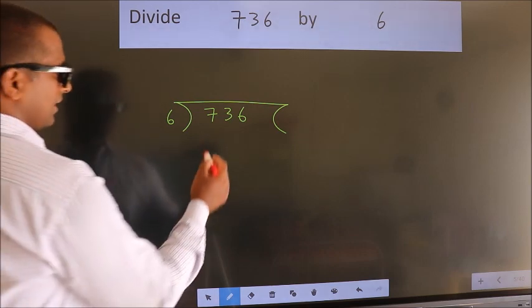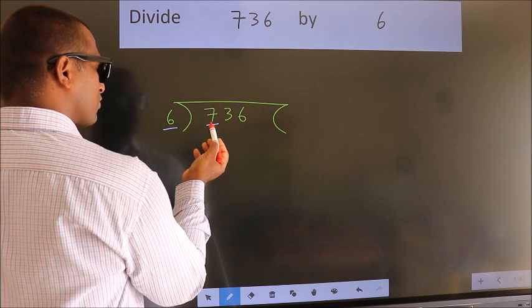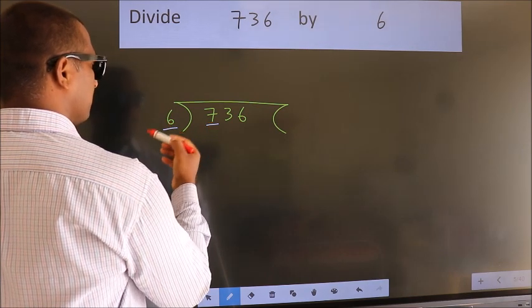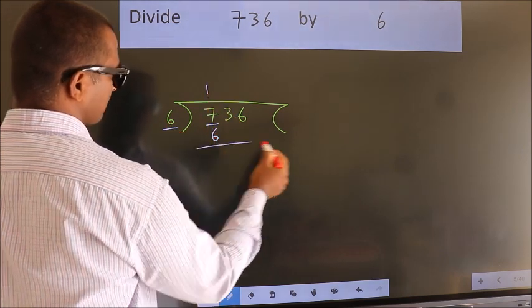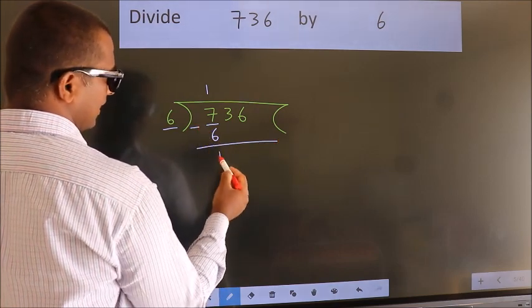Next. Here we have 7, here 6. A number close to 7 in 6 table is 6 times 1 is 6. Now we should subtract. We get 1.